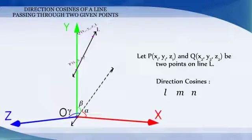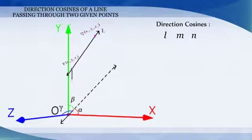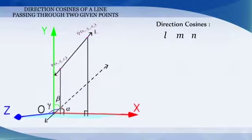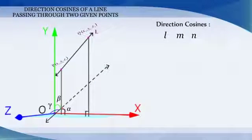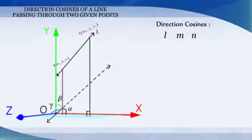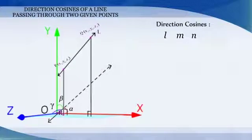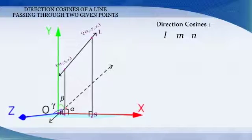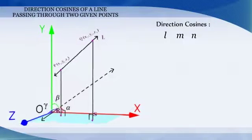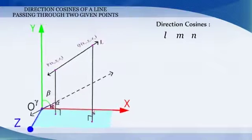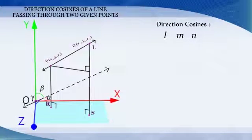Draw perpendiculars from P and Q to xz plane. Let these perpendiculars meet xz plane at R and S respectively. Draw a perpendicular from P to QS to meet QS at N.